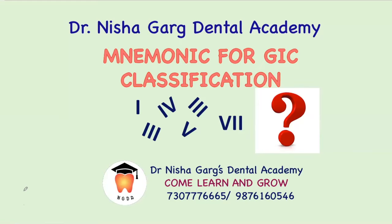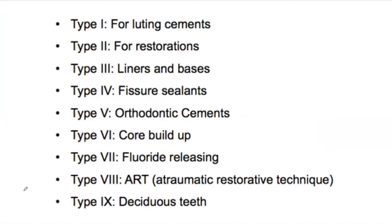Hello everyone. In today's video we'll be learning a trick to remember the GIC classification according to use. The traditional classification of glass ionomer cements according to Skinner was type 1 as luting cement, type 2 as restorative cement, and type 3 as liner and base.